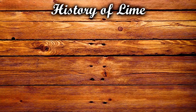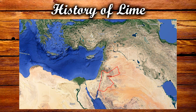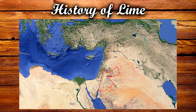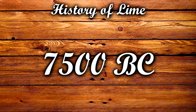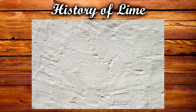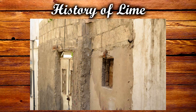Lime is easily made by heating limestone, and this was already known by the earliest civilizations. People who lived in the area where Jordan is now, around 7500 BC, made plaster from a mixture of lime and crushed limestone to cover the walls and floors of their homes.